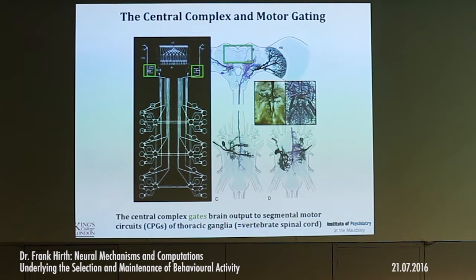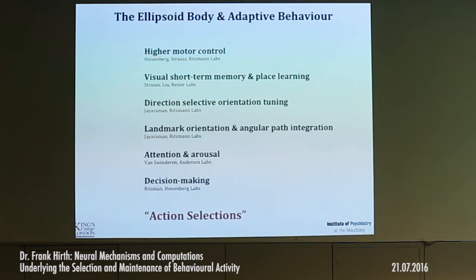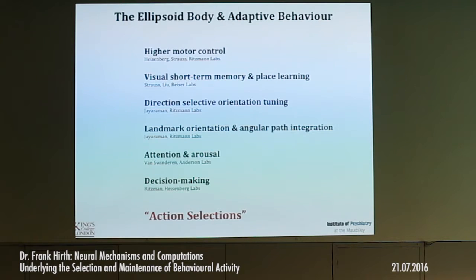Parts of the central complex called the lateral accessory lobe serve as a pre-motor command center where gating takes place to segmental motor circuits and central pattern generators of the thoracic ganglia, which then induce flight or walking. We are interested in addressing this, and now I'll focus on the ellipsoid body. Why? Because we know, when I mentioned all those behaviors, and I should add there's a recent paper showing it's even involved in sleep drive — the common denominator of all this is arguably action selection. In the case of sleep drive, you could even argue it is the suppression of activity, because sleep means inactivity.